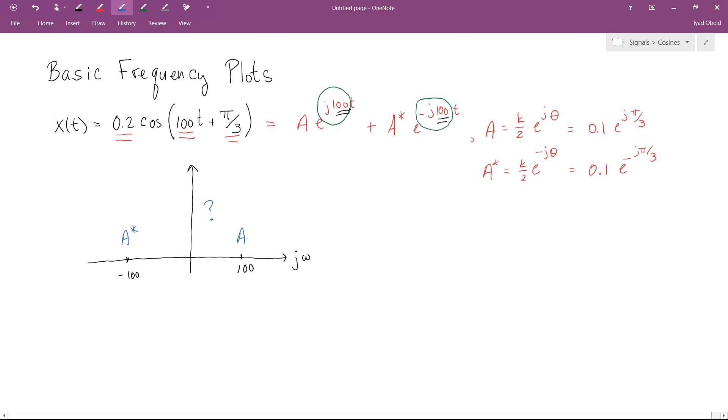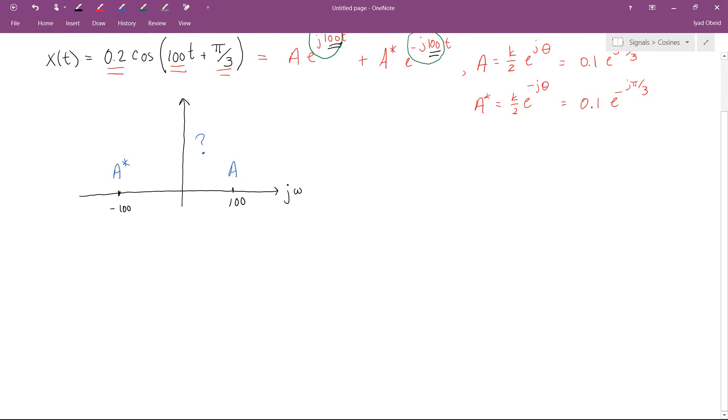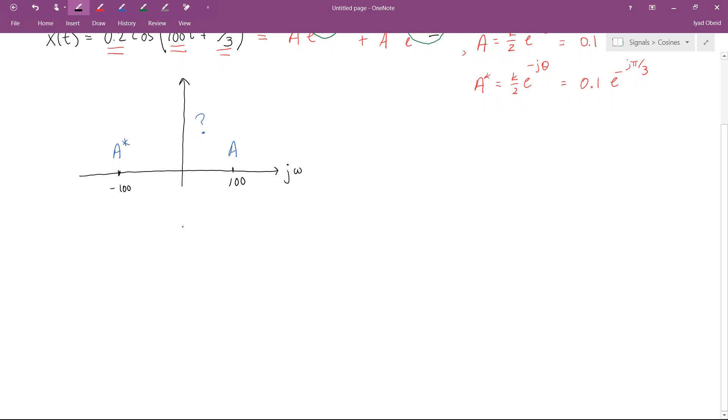So the answer turns out to be that I can't do this in one plot. I actually need two plots. So let's go ahead and create two sets of axes. So again, it's going to be a j omega axis. And the first axis is just going to be for the magnitude of A.